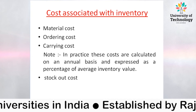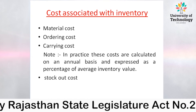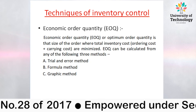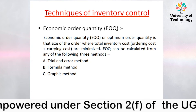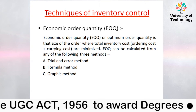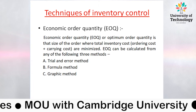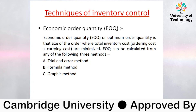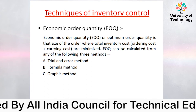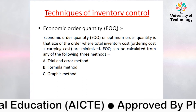The last cost is stock-out cost: the cost associated with the shortage of inventory. Whenever there is a shortage of inventory in the business, that is called stock-out or shortage cost. Now we move to the practical point — techniques of inventory. The first technique we discuss is Economic Order Quantity, called EOQ. EOQ or optimum order quantity is that size of order where total inventory cost — ordering cost plus carrying cost — is minimized.